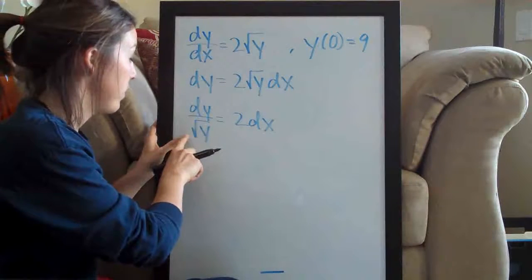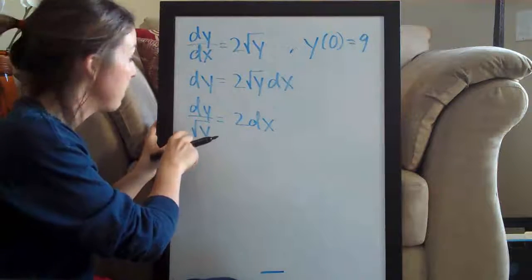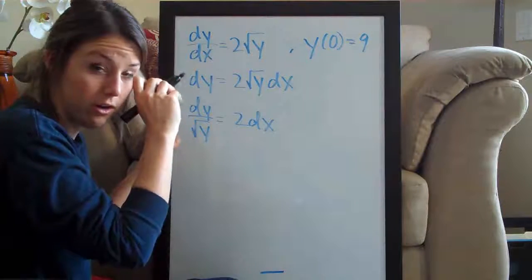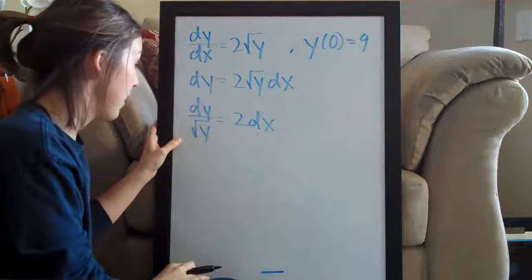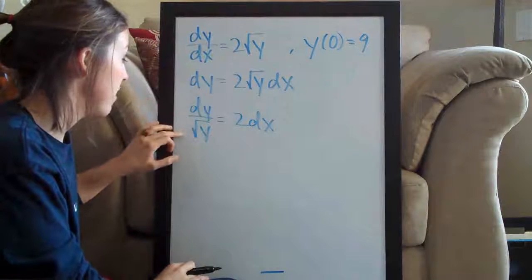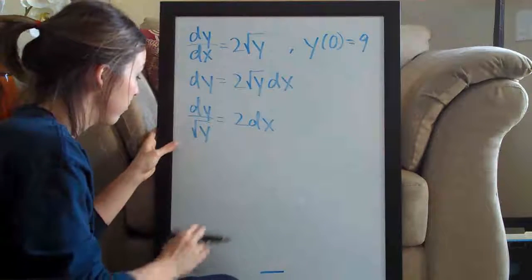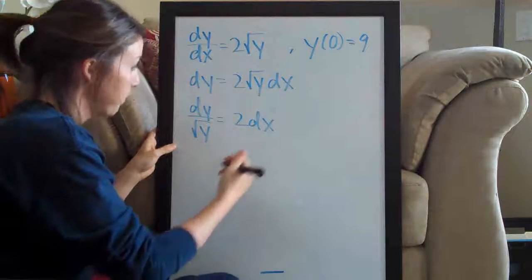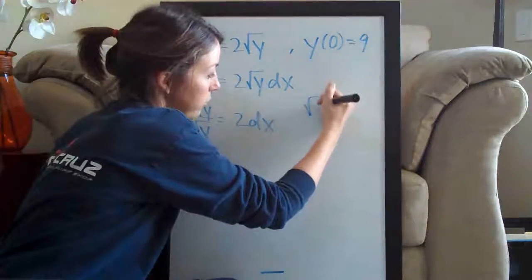I need to move this square root of y to the top of the fraction, to the numerator, to make it easier for me. I personally find it much easier to deal with when I have something in the numerator than in the denominator. So I'm going to convert. Of course we all remember that the square root of anything, like the square root of x, would be x to the one half.